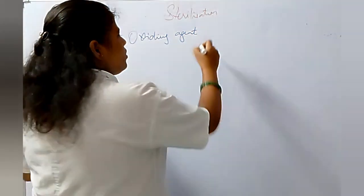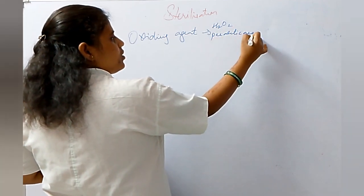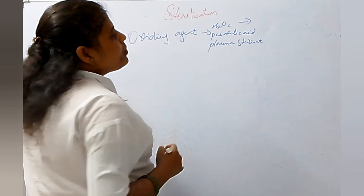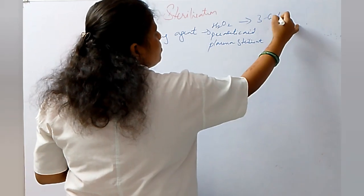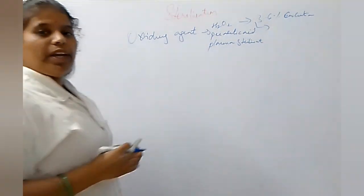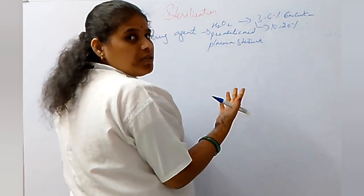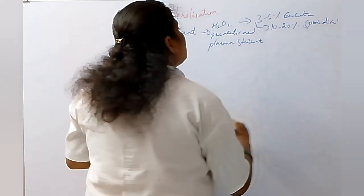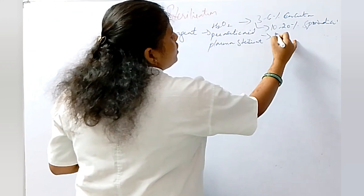Oxidizing agents include hydrogen peroxide, peracetic acid, and plasma sterilization. Hydrogen peroxide has bactericidal activity at 3–6% concentration. If we increase the concentration to 10–20%, it also has sporicidal activity. Peracetic acid is used as an antibacterial substance.